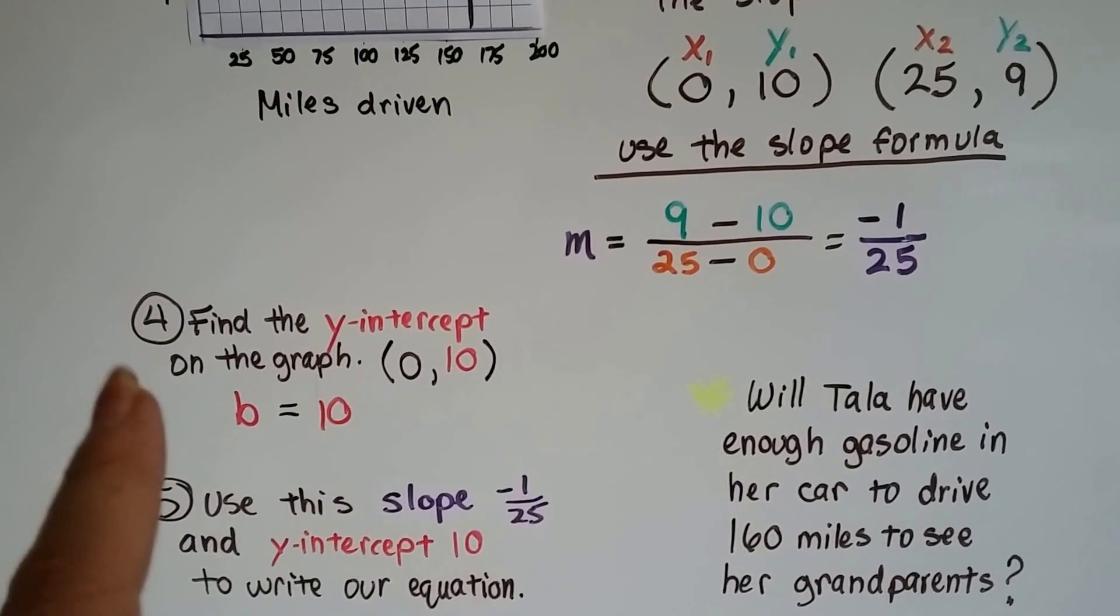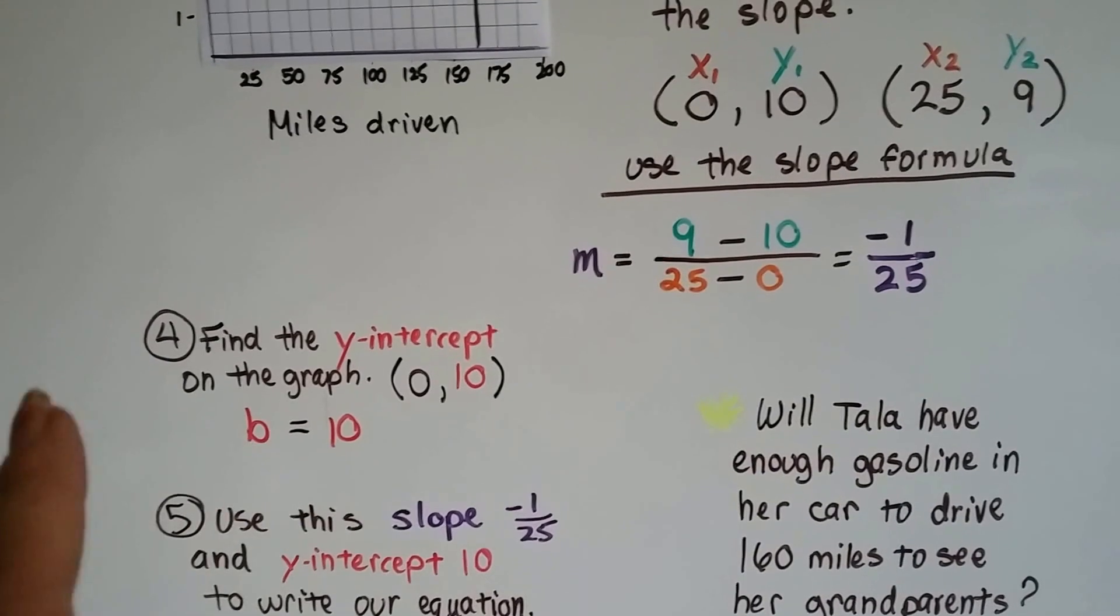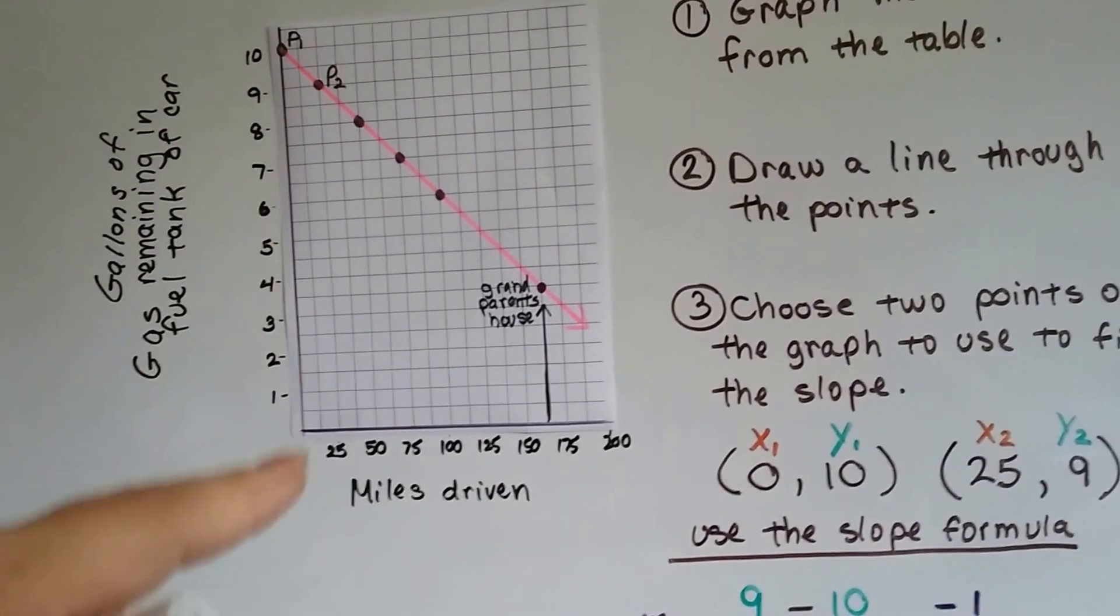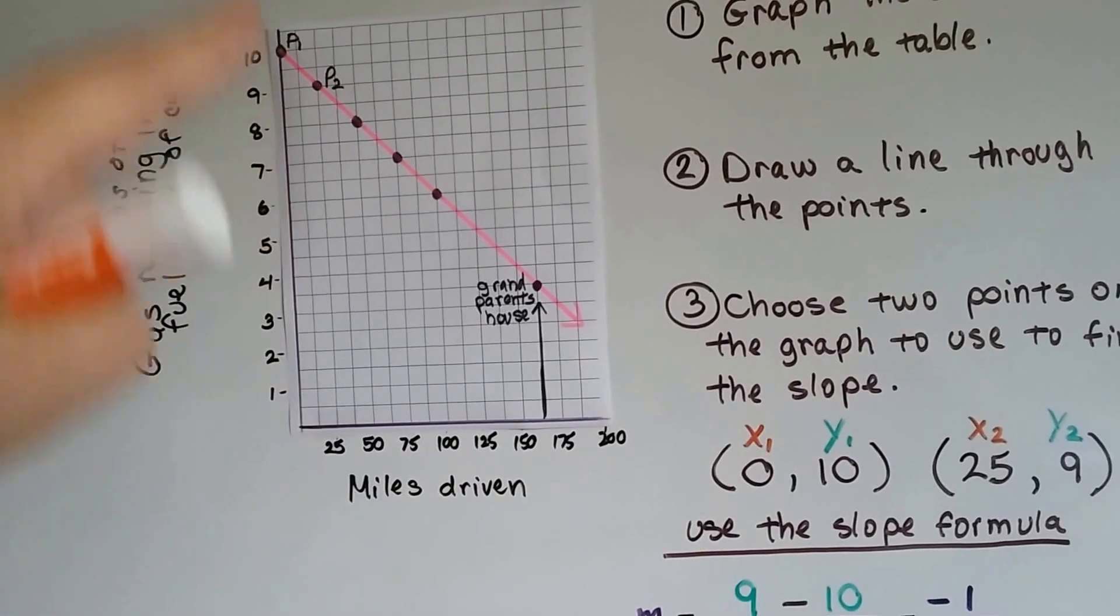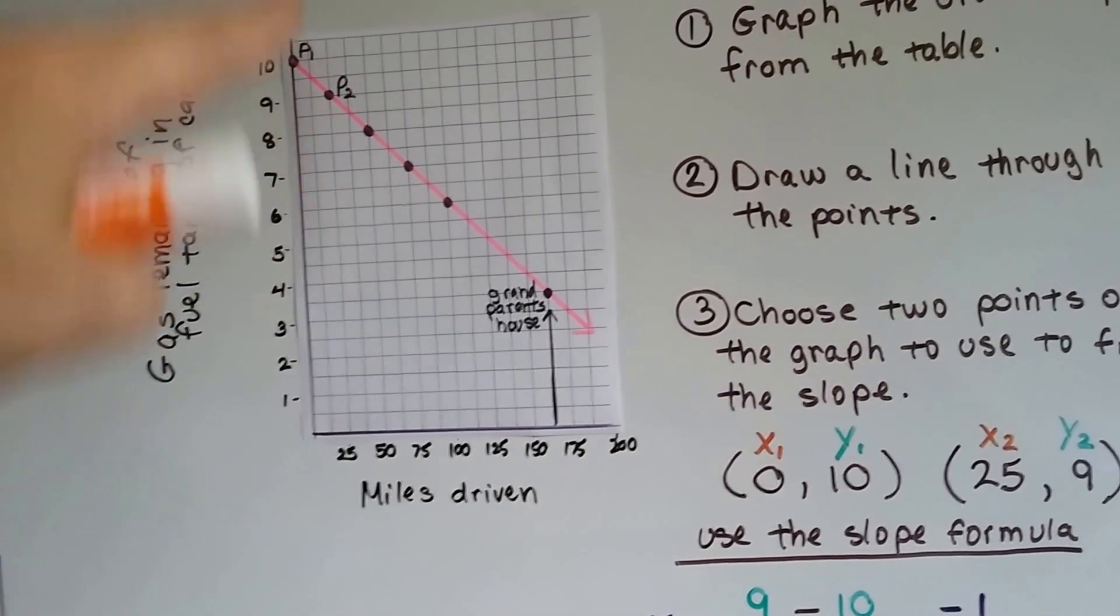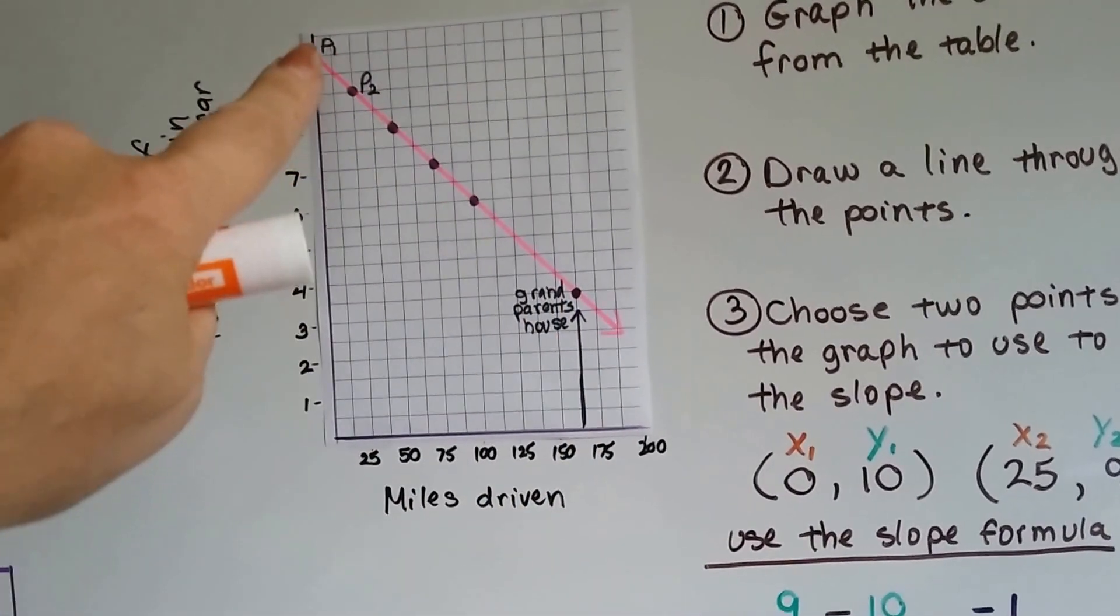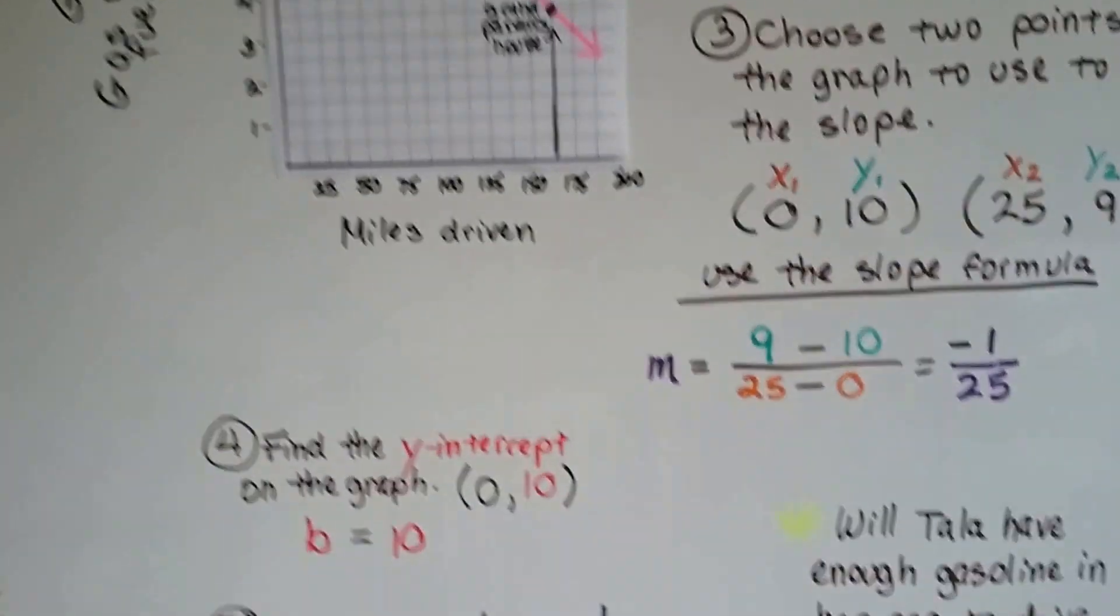Now we find the y-intercept on the graph by just looking at it. Where does the line cut through the y-axis? Here's the y-axis. Remember, y to the sky. Y is the one that goes up to the sky. So the line is hitting the y-axis at the 10. That's going to be our y-intercept.